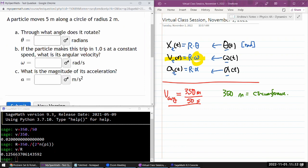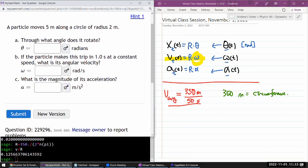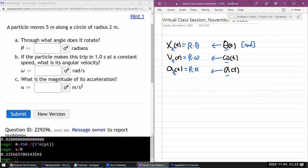Next question says a particle moves 5 meters along a circle of radius 2 meters. Let me sketch it out. We're looking at a circle of 2 meter radius. 5 meters doesn't sound like circumference, so it's moving a portion of that circle which is 5 meters. It's asking through what angle does it rotate?